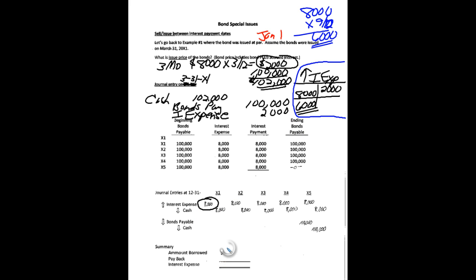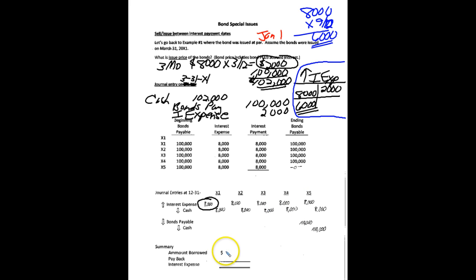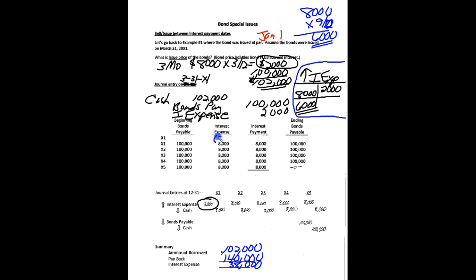Recall we would have borrowed $102,000. The payback is $140,000 — that's $8,000 a year plus the $100,000 principal. So we would have interest expense of $38,000. When the bonds were issued, we recorded negative interest expense of $2,000, and putting that in this column, we'll see that it all adds up to $38,000, and we're in agreement.